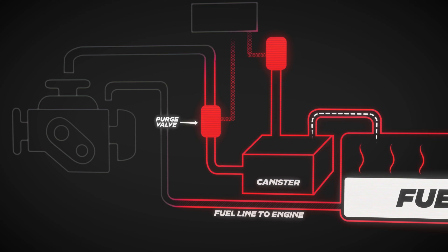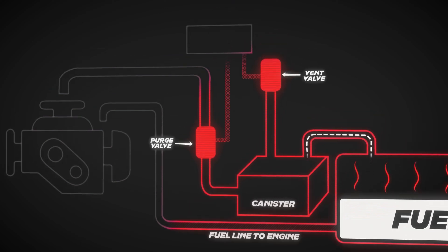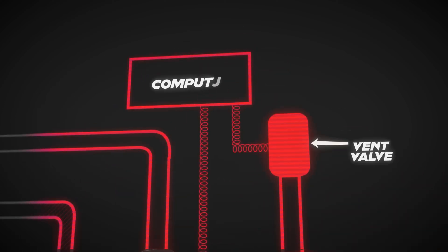There are two main devices that govern the movement of vapors in the EVAP system. We have the purge valve, which uses engine vacuum to pull in the vapors — normally located by the intake manifold. We also have the vent valve, which allows atmospheric air to enter the EVAP system for compensation of pressure and self-testing — normally mounted onto the canister. Both devices are controlled by the vehicle's computer, which takes in many inputs to determine when it's appropriate to activate them.